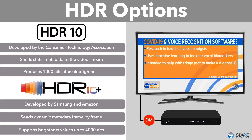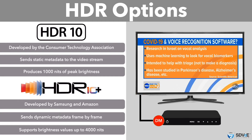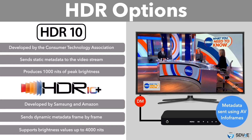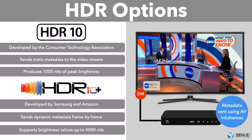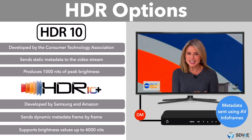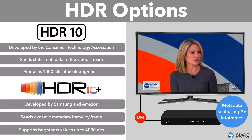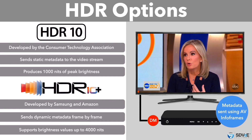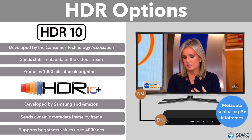HDR10 and HDR10+ both send their metadata from source to display using data passing mechanisms in the HDMI standard called AV info frames. These two formats are commonly used by film production companies, video game manufacturers, and TV show production companies.